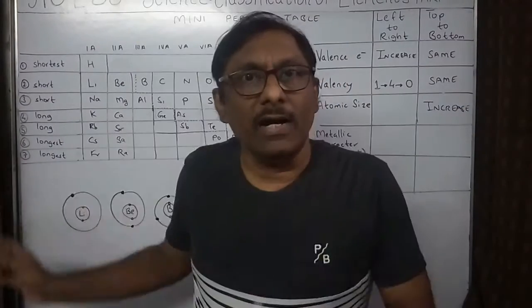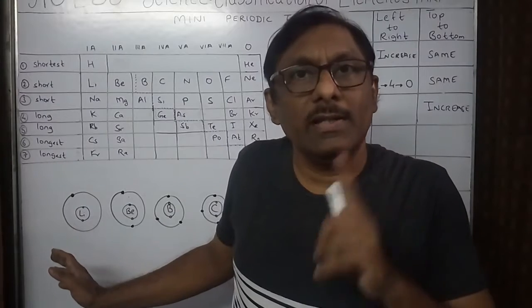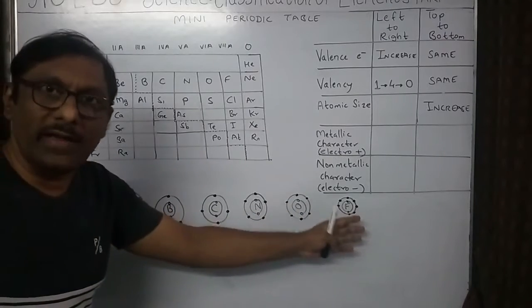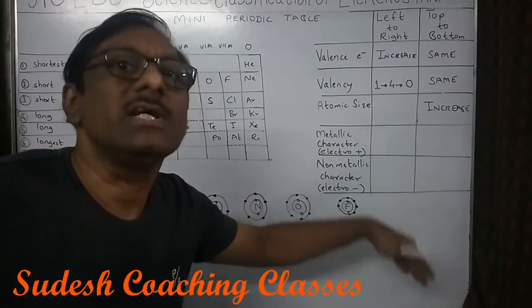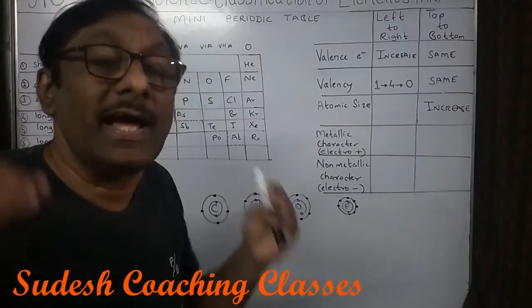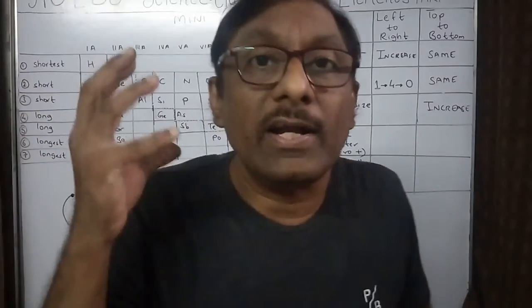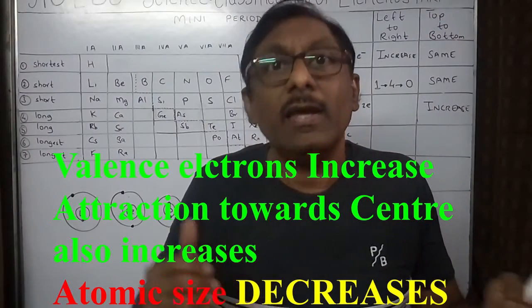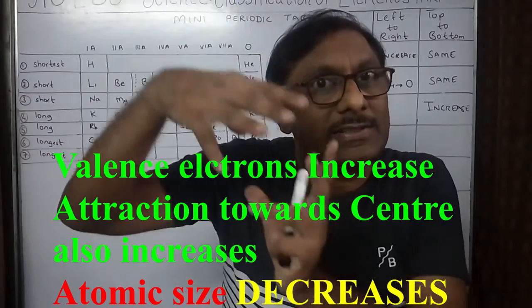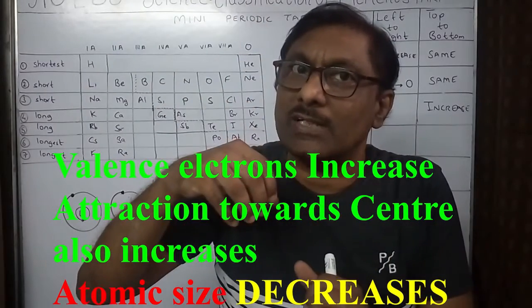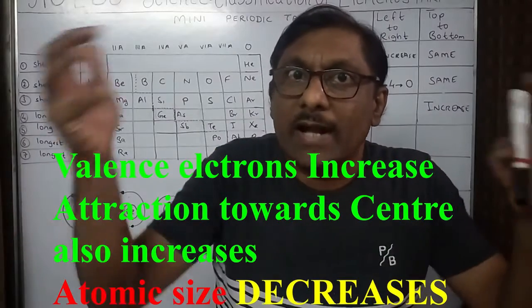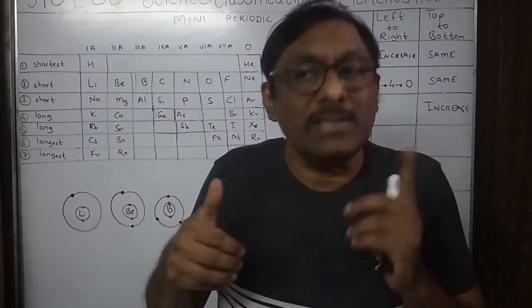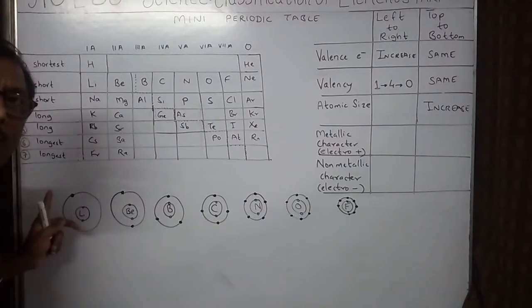Now let's look at atomic size as we go from left to right across the second period: lithium, beryllium, boron, carbon, nitrogen, oxygen, and fluorine — don't consider neon because a different rule applies there. As we go from left to right, the valence electrons increase, and with more electrons the attraction to the positively charged center increases.